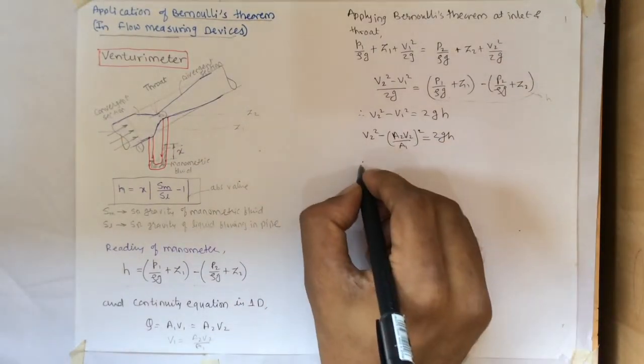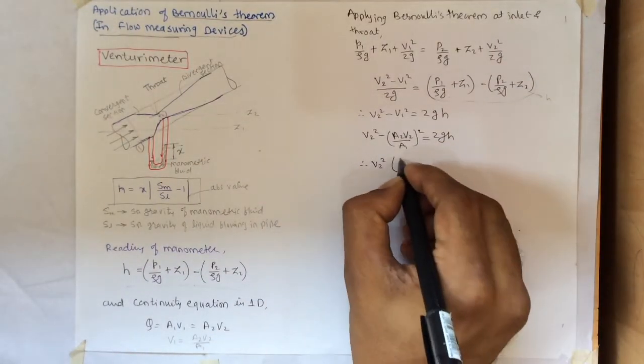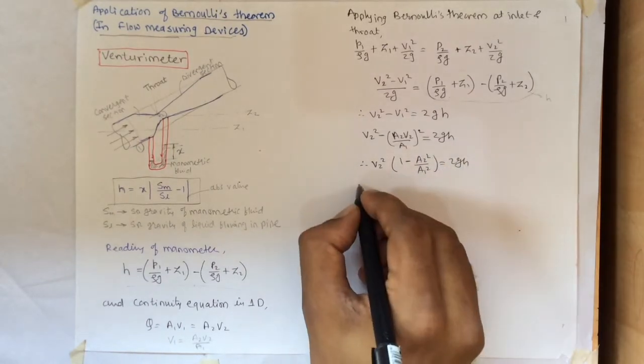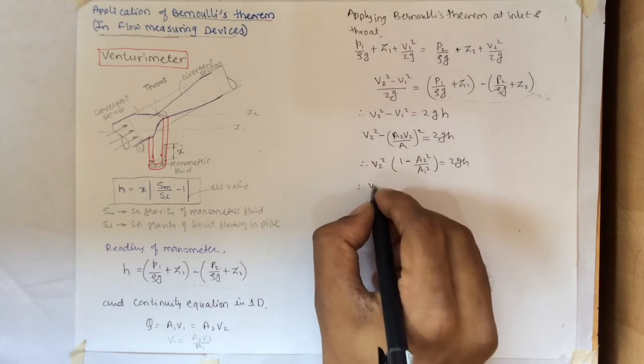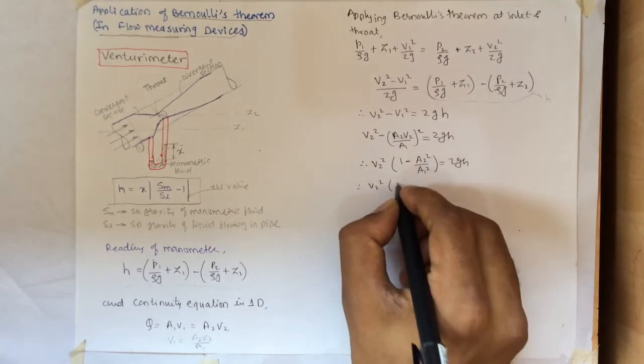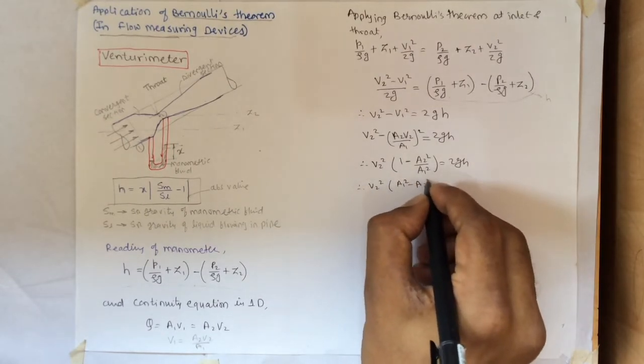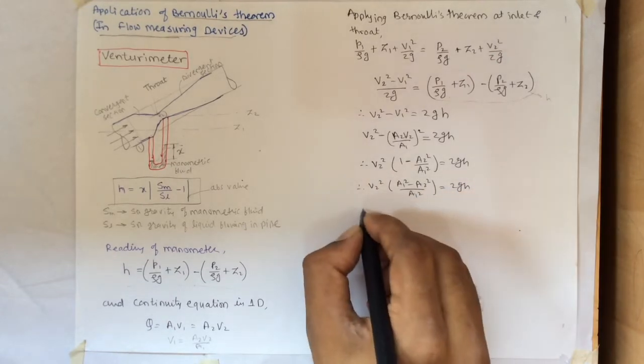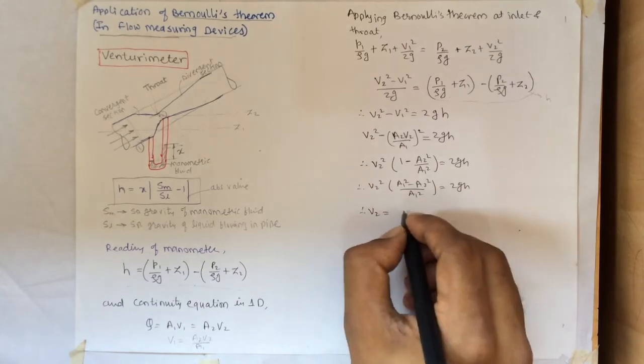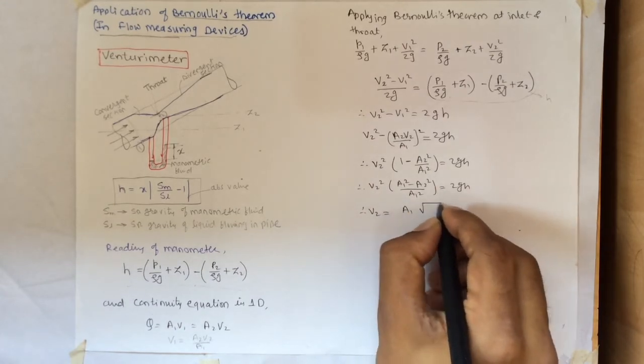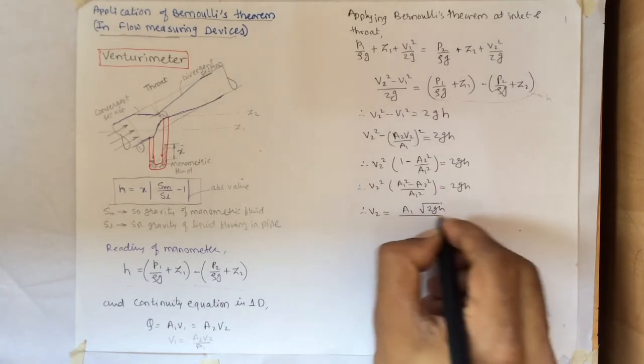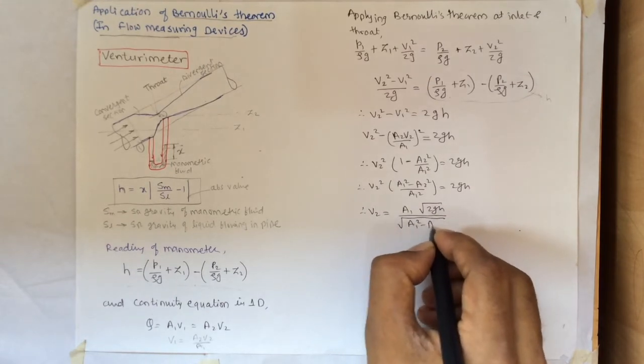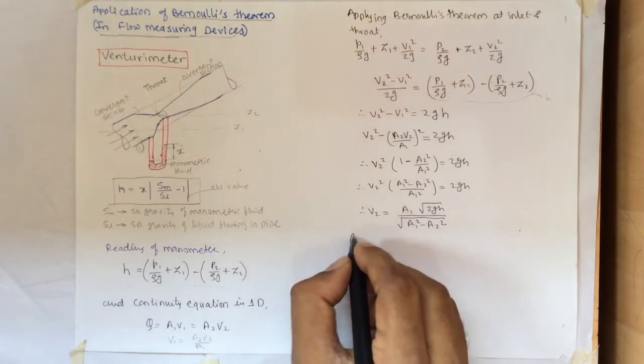If we take out V2 square, we get in bracket 1 minus A2 square divided by A1 square equals 2gh. After further simplification we get V2 square bracket A1 square minus A2 square divided by A1 square equals 2gh. After simplifying and taking the square root we get V2 equals A1 under root 2gh divided by under root A1 square minus A2 square.